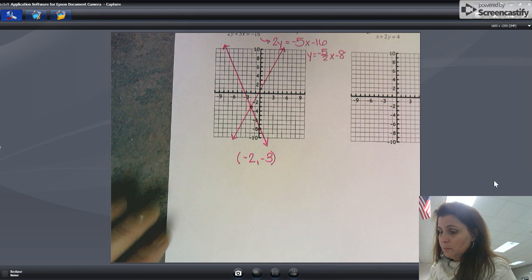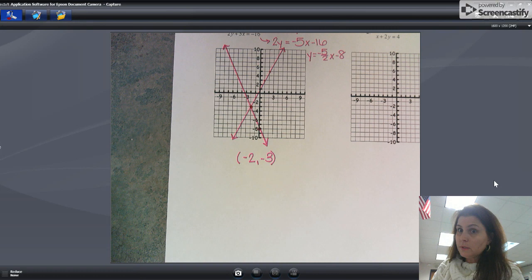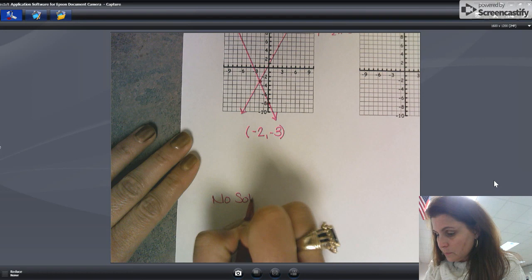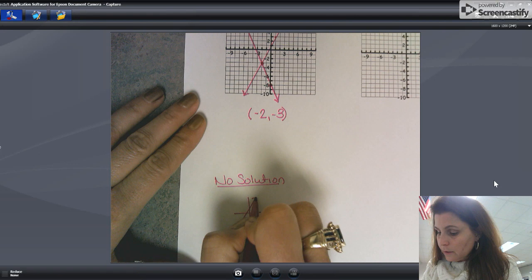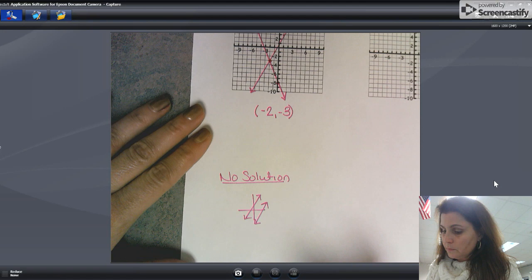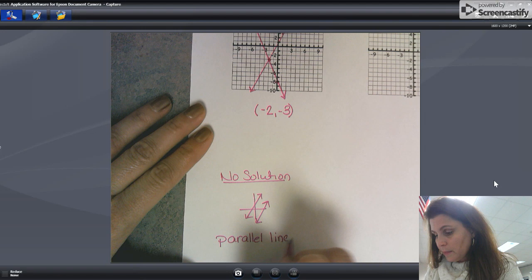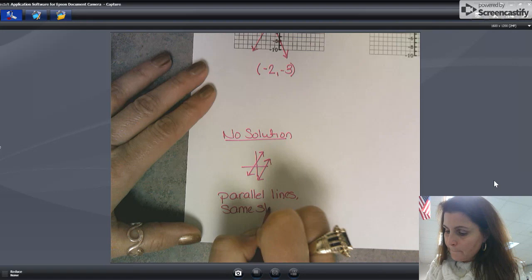Before you do that though, I want to remind you of a couple things. Most systems of equations have a solution, but sometimes it gets really interesting. Sometimes, remember, there is no solution. Sometimes we can have a system that has no solution. And what's that going to look like? Well, graphically speaking, that's going to be when your lines are parallel. If you have parallel lines, there is no solution to that system. Of course, you know that parallel lines have the same slope but different y-intercepts.